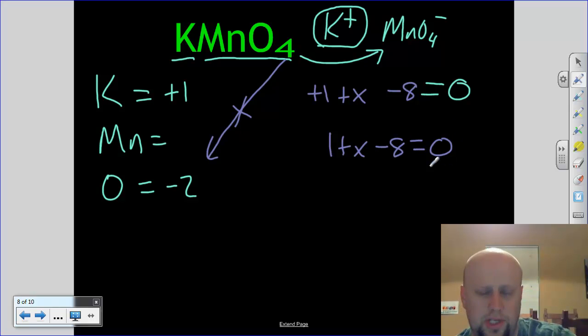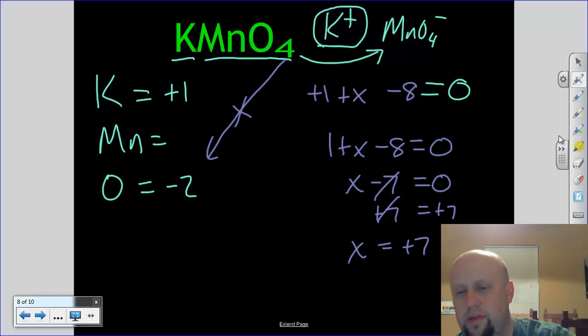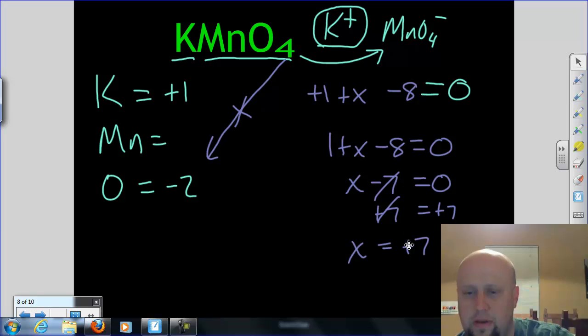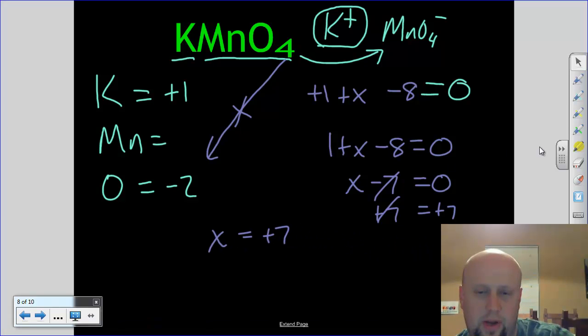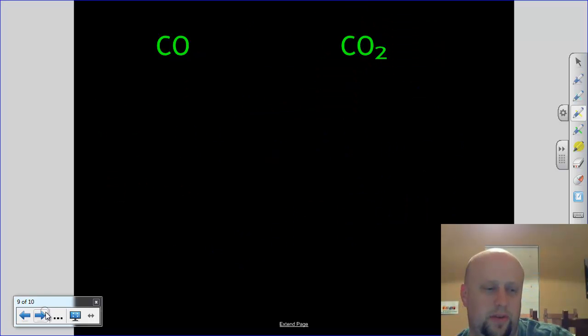Rule four says it all has to equal zero. So we're going to do the algebra. Negative eight plus one gives me a negative seven. I'm going to add seven to both sides, and that's going to give me, it cancels, and I'm going to get x equals plus seven. In fact, I'm going to grab this real quick, guys, and write the answer over here. So x equals plus seven. Now, what was our x? x is manganese, so manganese oxidation number is plus seven.